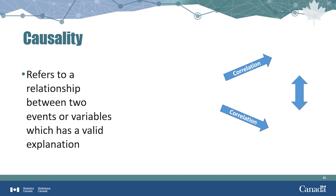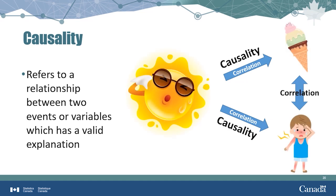Causality refers to a relationship between two events or variables which has a valid explanation. Unlike correlation, with causality this valid explanation turns possibility into actuality. To say something causes an effect on another variable means the result of one event is directly influenced by the other — either the cause precedes the effect, or the effect changes when the cause changes. For example, dry, hot, and sunny weather will cause people to buy more ice cream than in cold weather. Dry, hot, and sunny weather will also cause an increase in sunburns compared to colder, rainy weather.